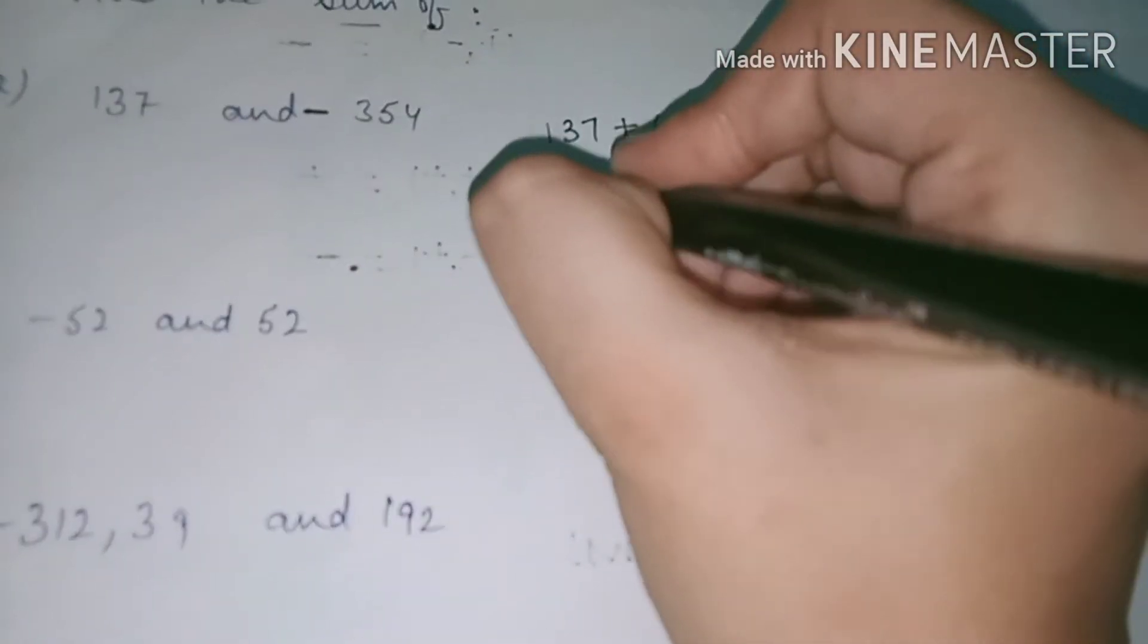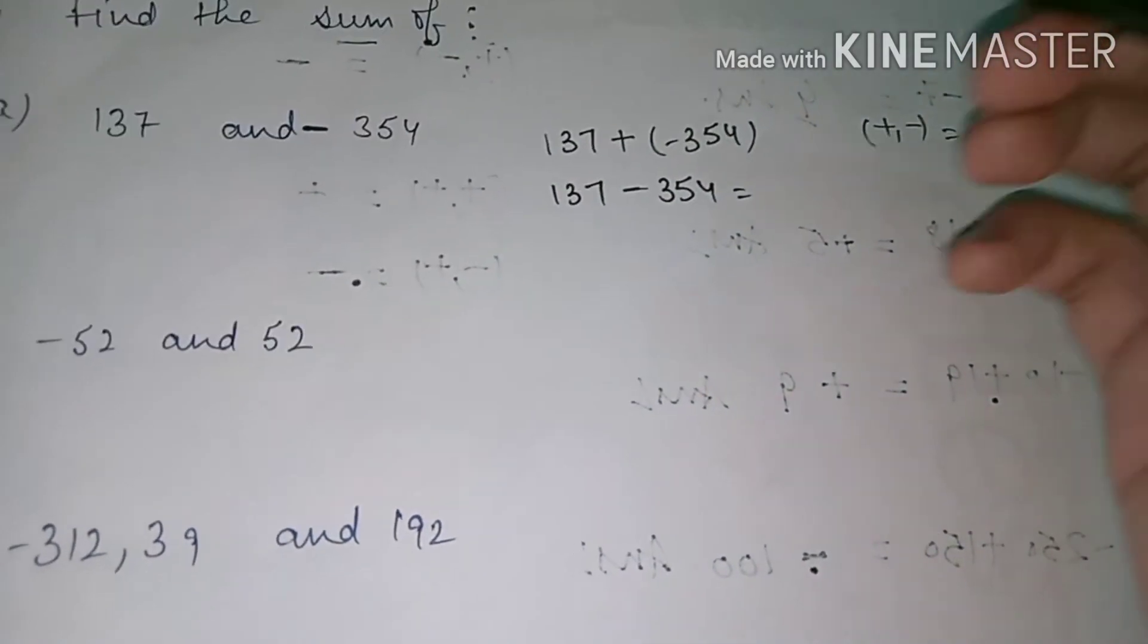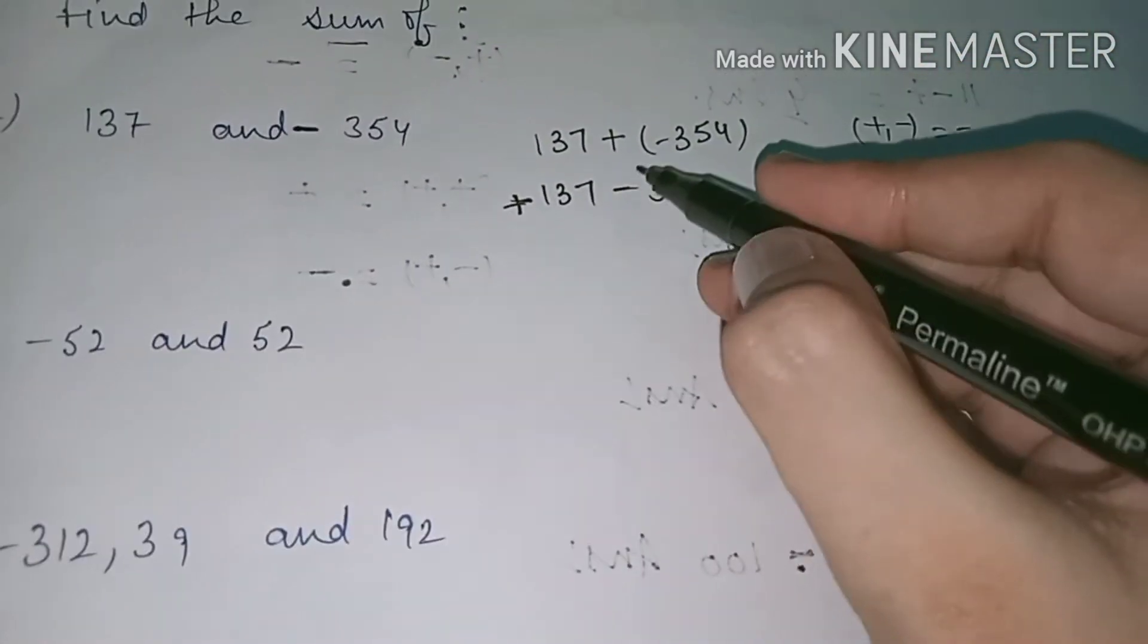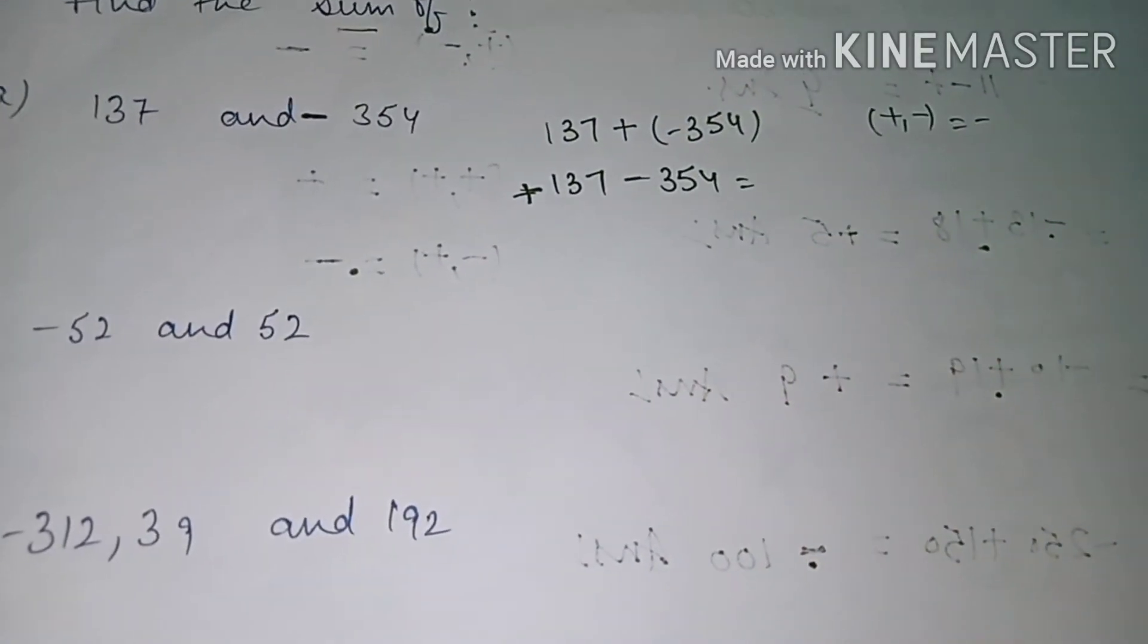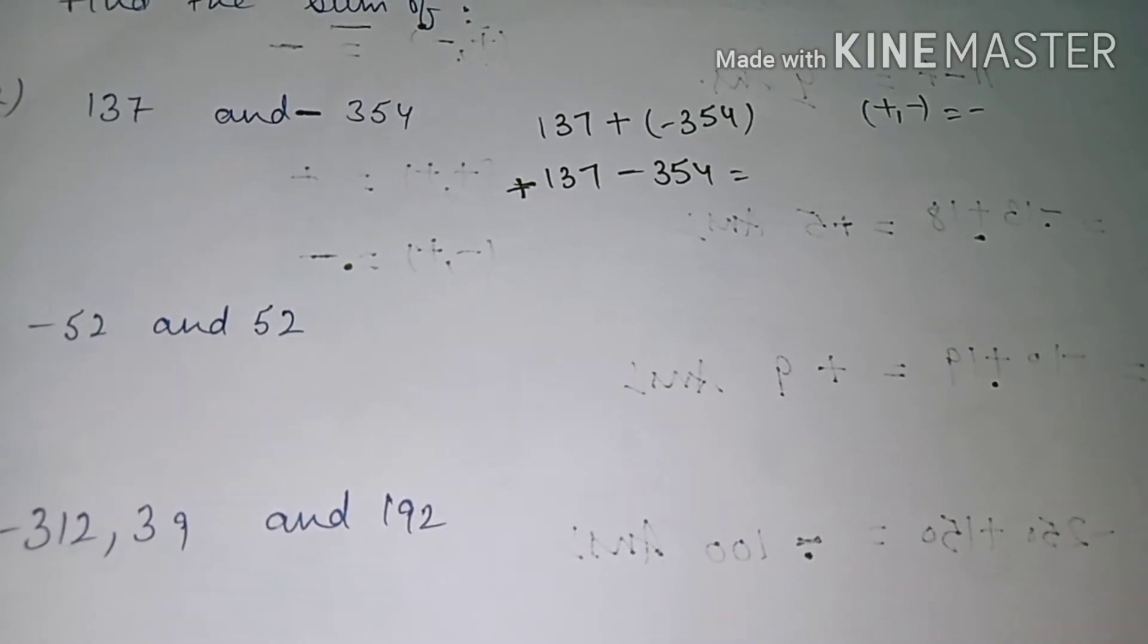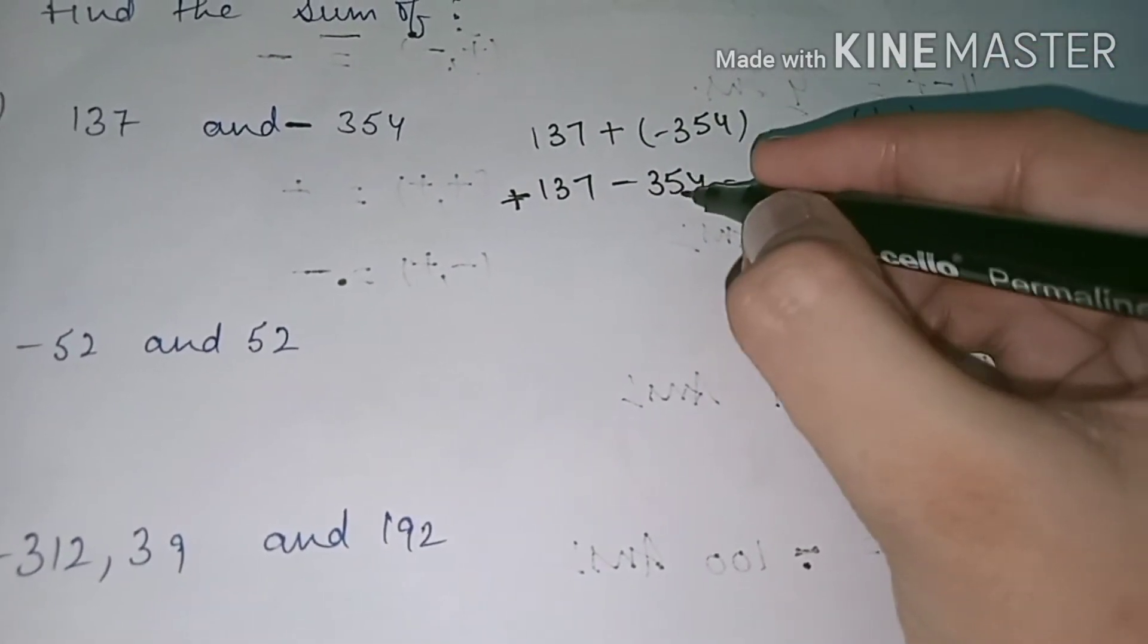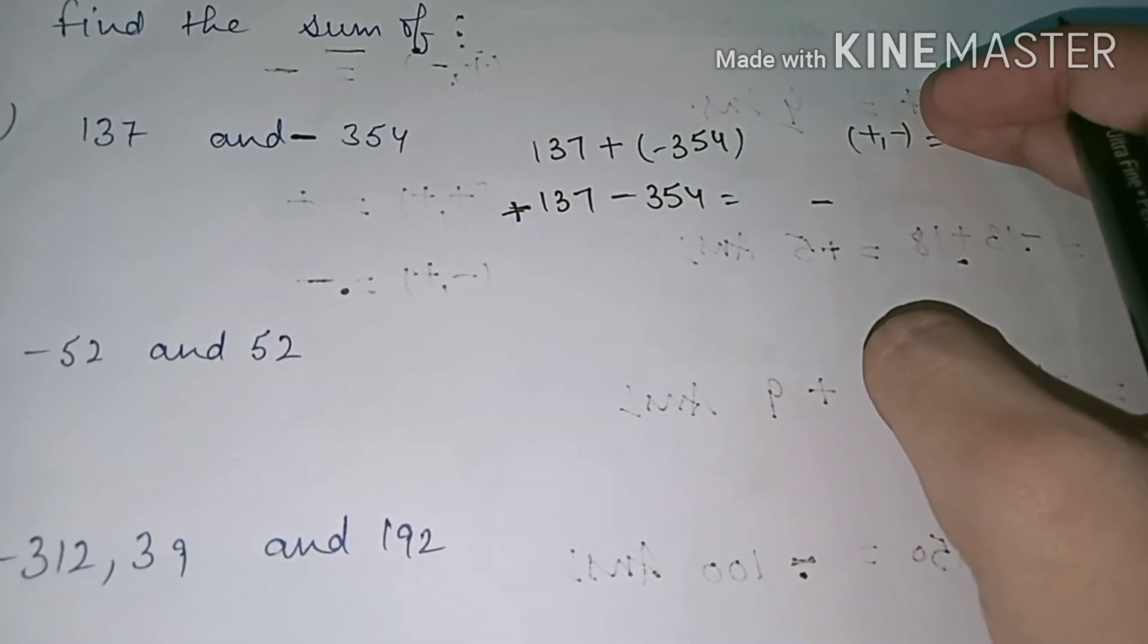So here I call 137 plus minus 354. Now you must know if the person has no sign which is plus, and the person has a sign, the minus will be minus. If this is plus or minus, what is minus? So the answer will always come to minus. Subtracting 137 from 354, it means minus. Answer: 354 minus 137, subtracting, minus 217.